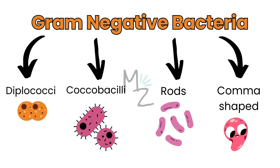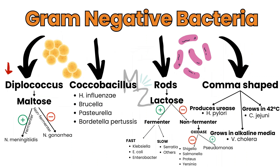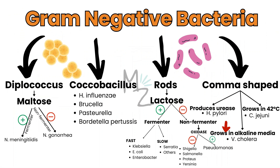Gram-negative bacteria are further subdivided based on different shapes into diplococci, coccobacilli, rods, and comma shapes. Diplococci are further subdivided based on maltose fermentation: if a bacterium ferments maltose, it's Neisseria meningitidis; if it doesn't, it's Neisseria gonorrhea. Coccobacilli include Haemophilus influenzae, Brucella, Pasteurella, and Bordetella pertussis. Rods are further subdivided based on lactose fermentation — fast fermenters include Klebsiella, E. coli, and Enterobacter; slow ones include Serratia. Non-lactose fermenters are subdivided based on oxidase test: oxidase positive is Pseudomonas; oxidase negative includes Shigella, Salmonella, Proteus, and Yersinia. Comma-shaped bacteria: urease-producing is Helicobacter pylori; grows in alkaline media is Vibrio cholerae; grows at 42°C is Campylobacter jejuni.